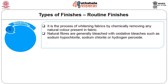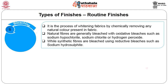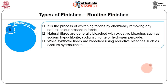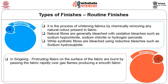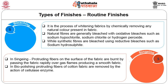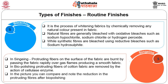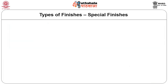Synthetic fibers are bleached using reducing bleaches such as sodium hydrosulphite. In singeing, protruding fibers on the surface of the fabric are burnt by passing the fabric rapidly over gas flames, producing a smooth fabric. In biopolishing, protruding fibers of cotton fabric are removed by the action of cellulase enzyme. You can compare and note the reduction in protruding fibers after biopolishing.